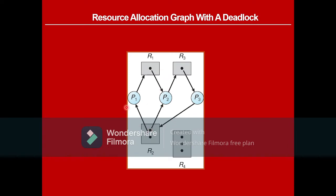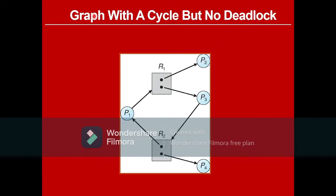You can see there is a cycle in the graph. Whenever there is a cycle, you can say it may have a deadlock — or it may not. This next resource allocation graph also has a cycle, but there is no deadlock. Let's check: there are four processes P1, P2, P3, P4 and two instances of resource R1 and two instances of resource R2.